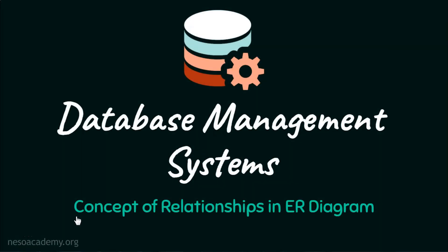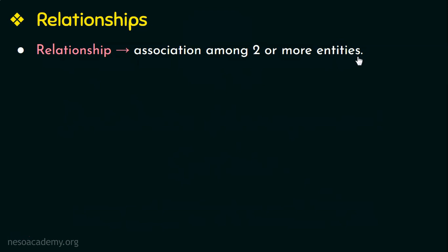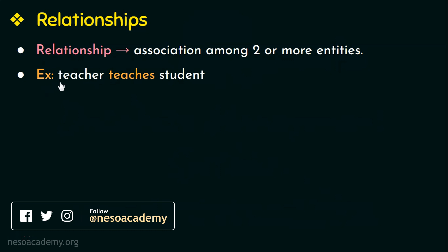Hello everyone and welcome back. In this video we are going to discuss the concept of relationships in ER diagrams or an ER model. A relationship is an association, connection, or link among two or more entities. For example, 'teacher teaches student' — here teacher and student are two entities, and 'teaches' is the relationship that connects or links these two entities.